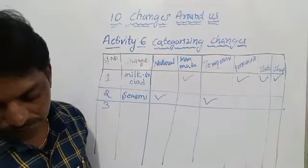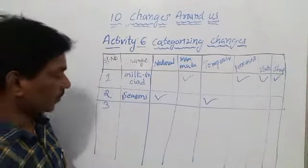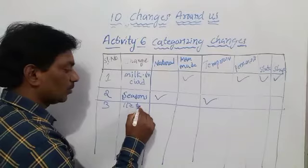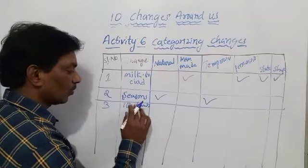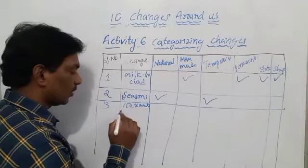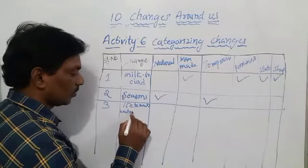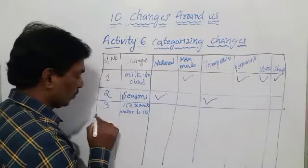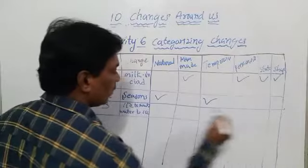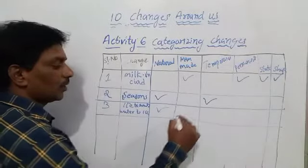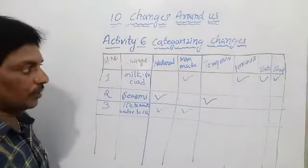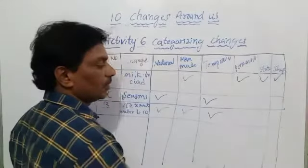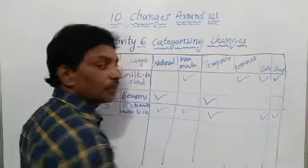The third example is the change of ice into water and water into ice. In nature this occurs naturally, and man-made activities can also cause it. It is a temporary change. Both state and shape also change.